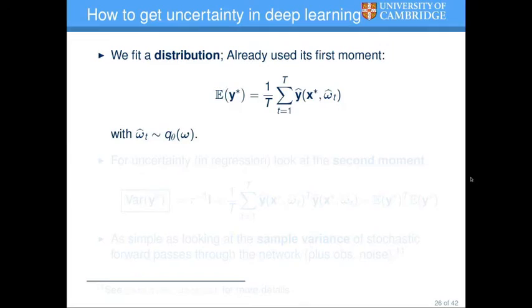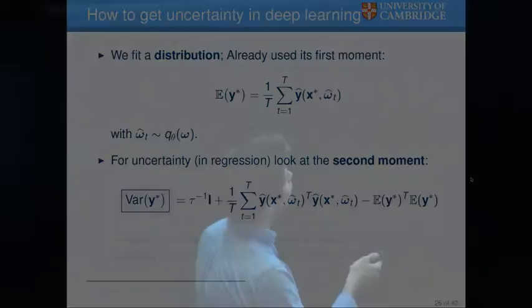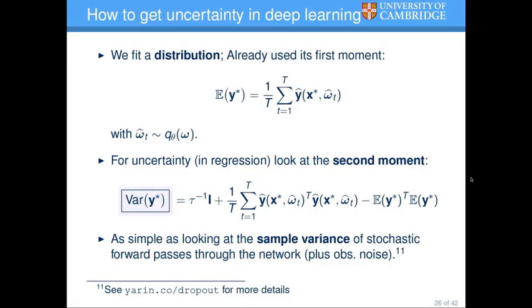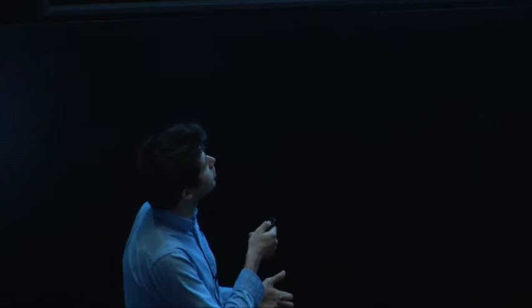Luckily, since we fit a distribution, we already talked about the first moment — the predictive mean. But we can also look at the second moment, the predictive uncertainty, which can simply be evaluated by the sample variance of stochastic forward passes. In more practical terms, to get uncertainty for a point X, all you need to do is drop units at test time, do that ten times, and accumulate the sample variance. In Python, that's just five lines. This is the most practical way to get uncertainty in deep learning that I know of.